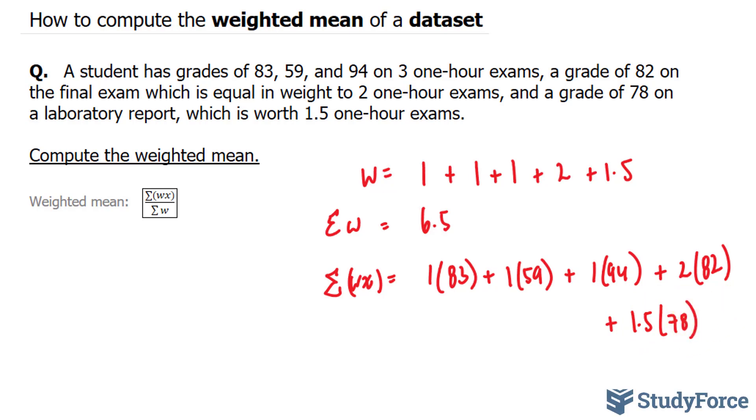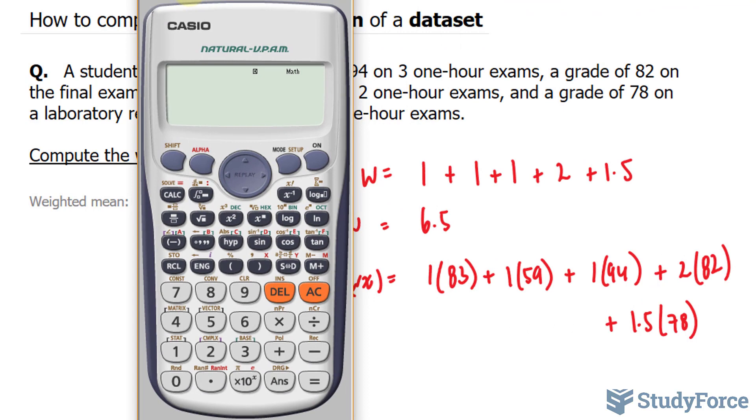So let's go ahead and find the answer to this. I'll use my calculator. 83, plus 59, plus 94, plus 2 times 82, plus 1.5 times 78. This gives me 517.